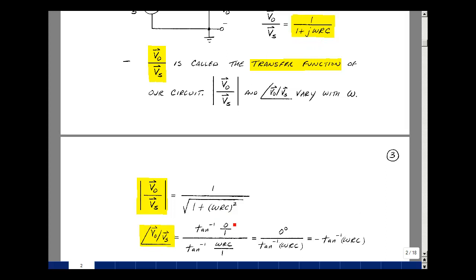The angle is going to be the angle of the numerator minus the angle of the denominator, but the angle of the numerator is the arctangent of the imaginary divided by the real, but the imaginary is 0, so it's just equal to 0 degrees. For the denominator, the imaginary term is ωRC divided by 1 is the real at the arctangent of ωRC. The final angle is the angle of the numerator minus the angle of the denominator. Obviously, these both vary with frequency.